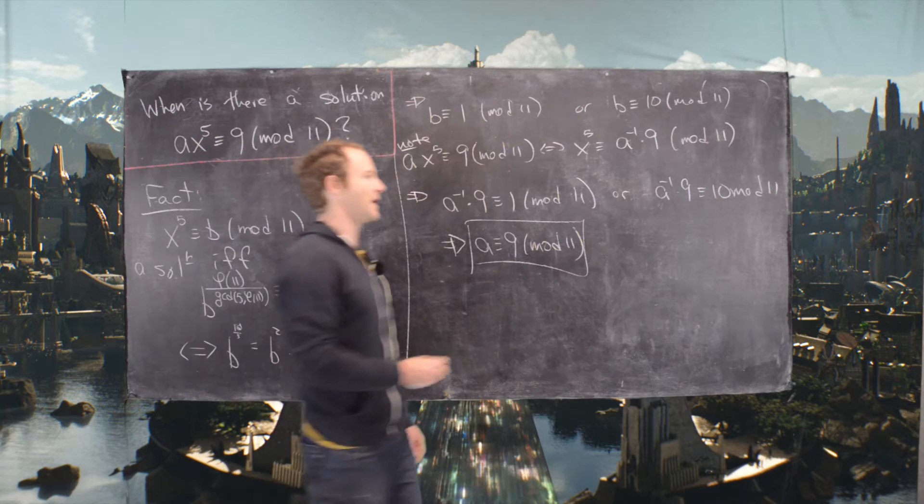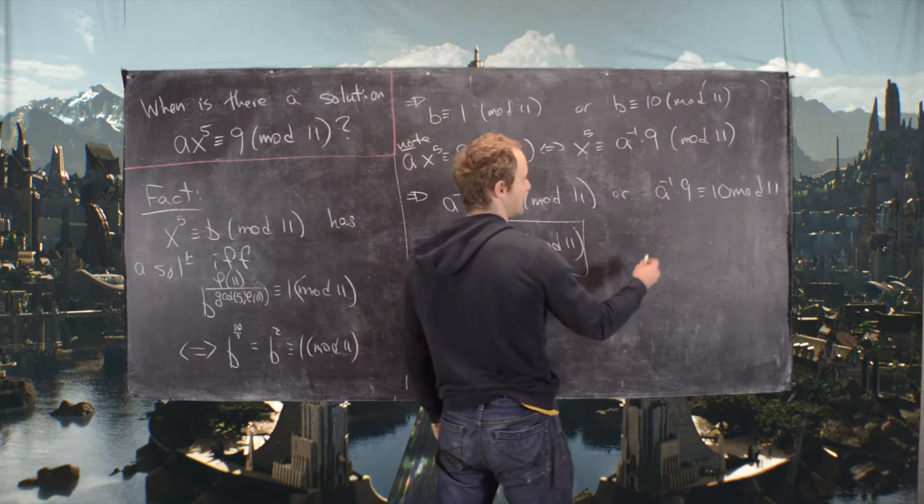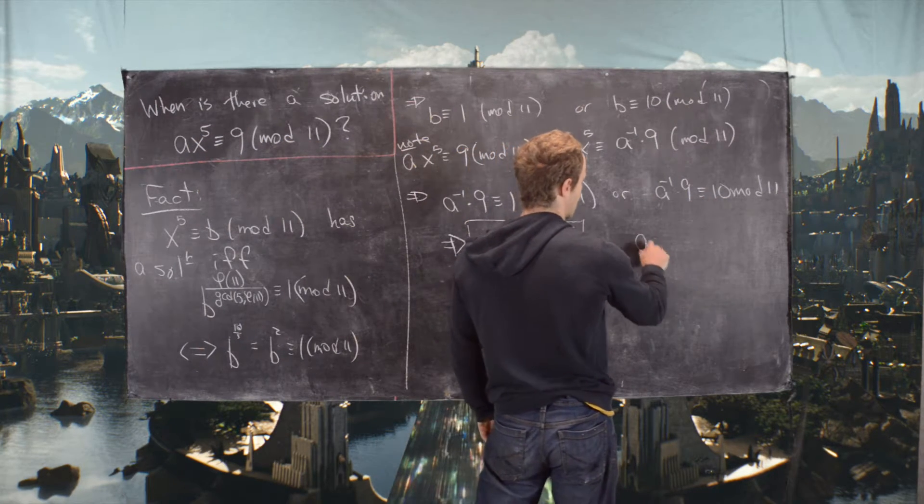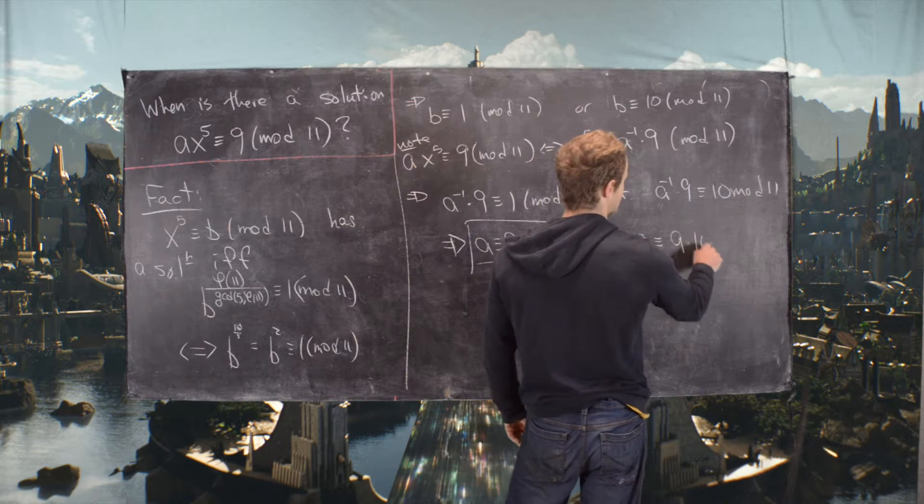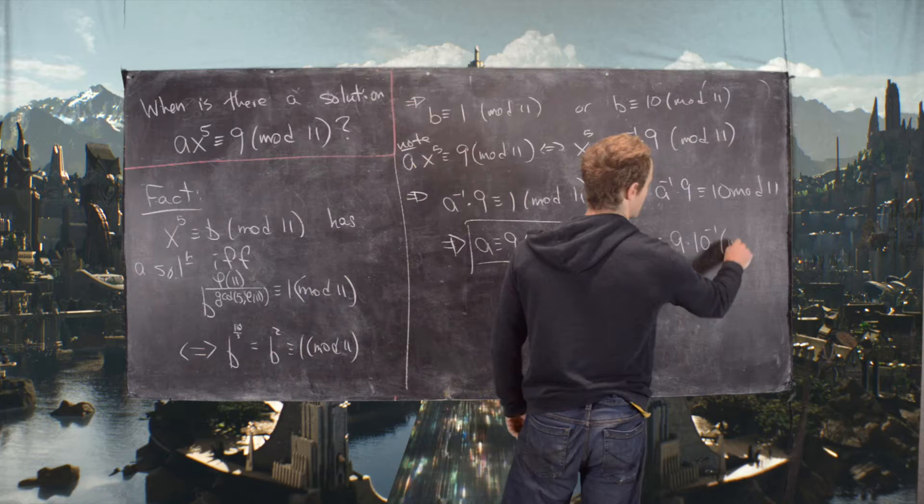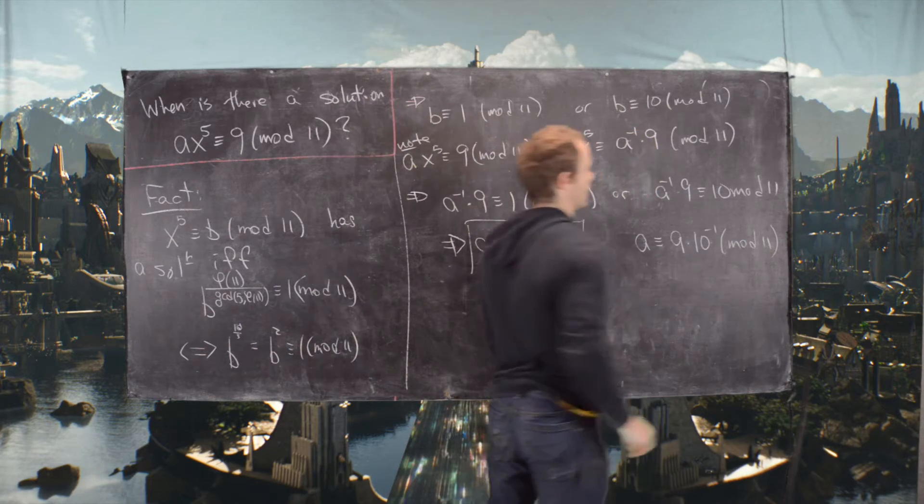Now, this one's a bit trickier, but moving the A over and then the 10 over, notice we get that A ≡ 9 · 10^(-1) (mod 11).